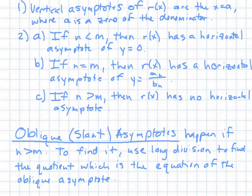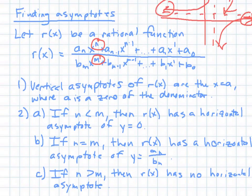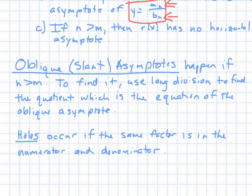Horizontal asymptotes depend on the degrees of the numerator (n) and denominator (m). If the numerator's degree is smaller than the denominator's degree, your horizontal asymptote is always y = 0. If they are equal to each other, the horizontal asymptote is the leading coefficient of the numerator divided by the leading coefficient of the denominator. If the degree of the numerator is bigger than the degree of the denominator, there is no horizontal asymptote — instead you get an oblique or slant asymptote, which changes from a horizontal line to a line with a slope.